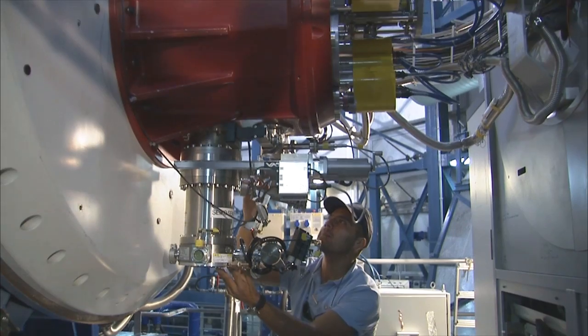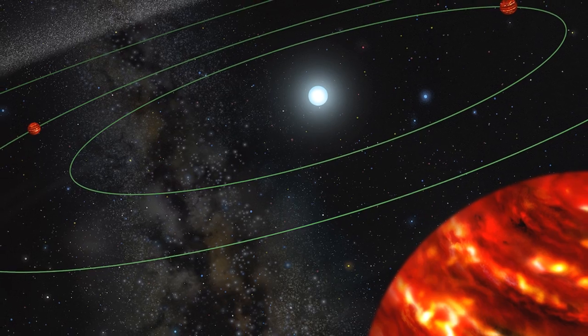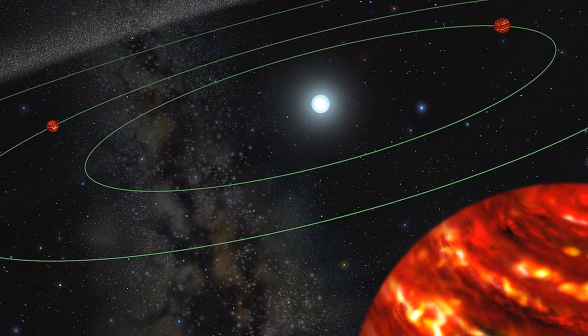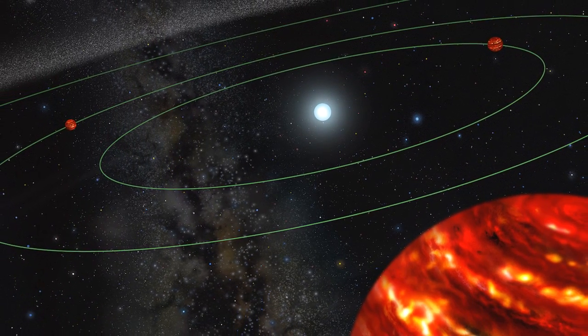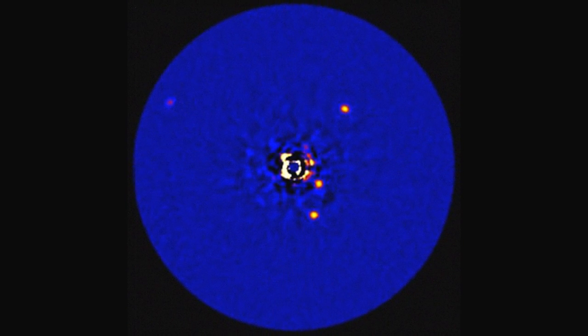In 2010, NACO went one step further. This star is 130 light-years away from Earth. It is younger and brighter than the Sun, and four planets circle around it in wide orbits.